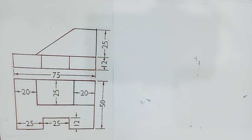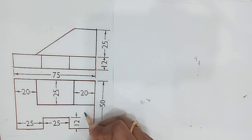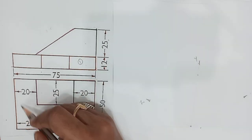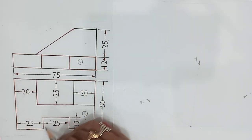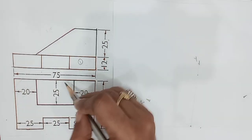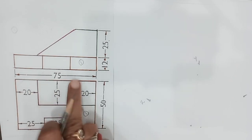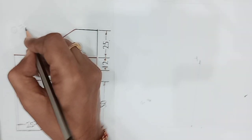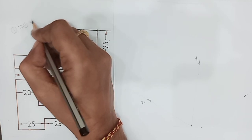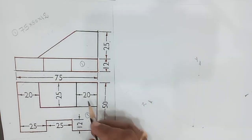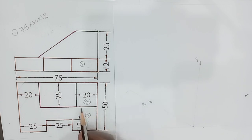The total object is to be divided into some components. The first part: this is the top view of the first part, and this related front view image is this portion. This top view is this particular rectangle, and this is the related front view.